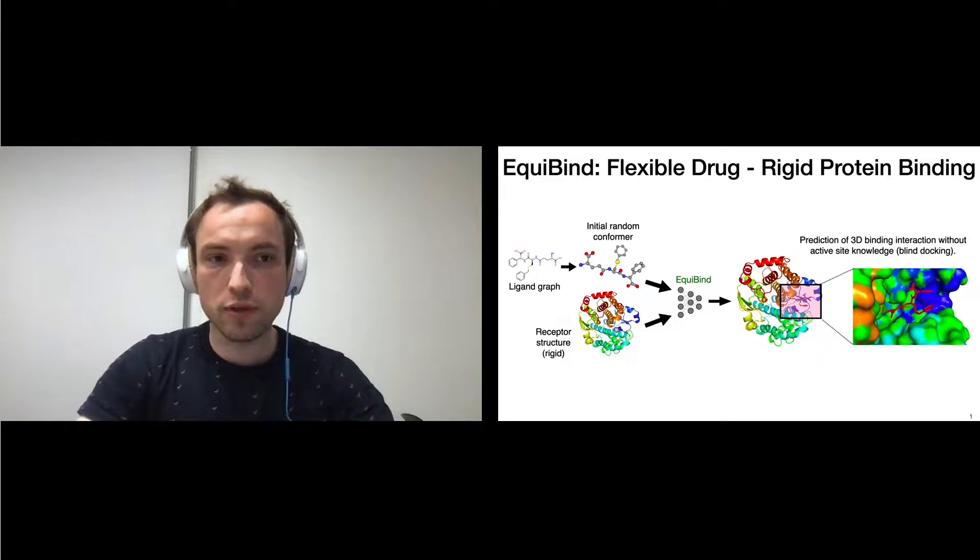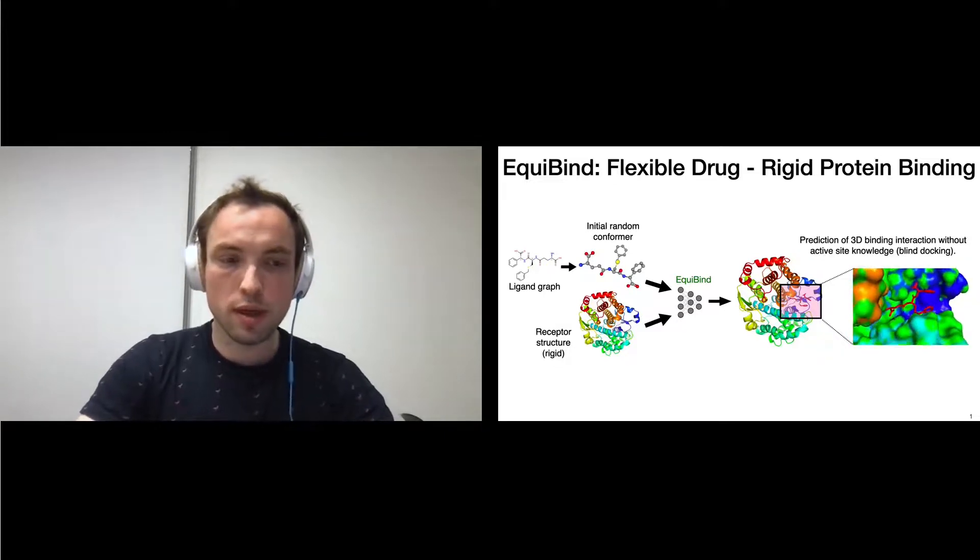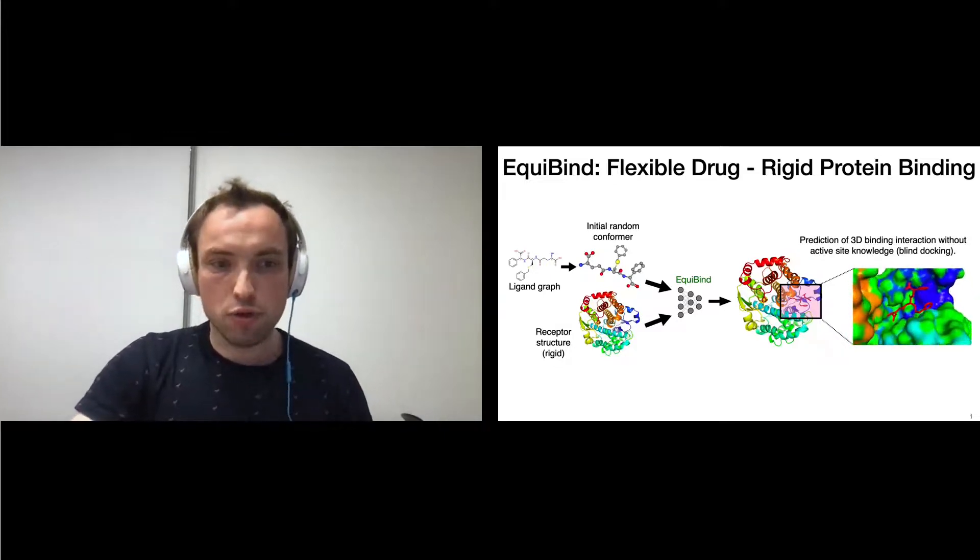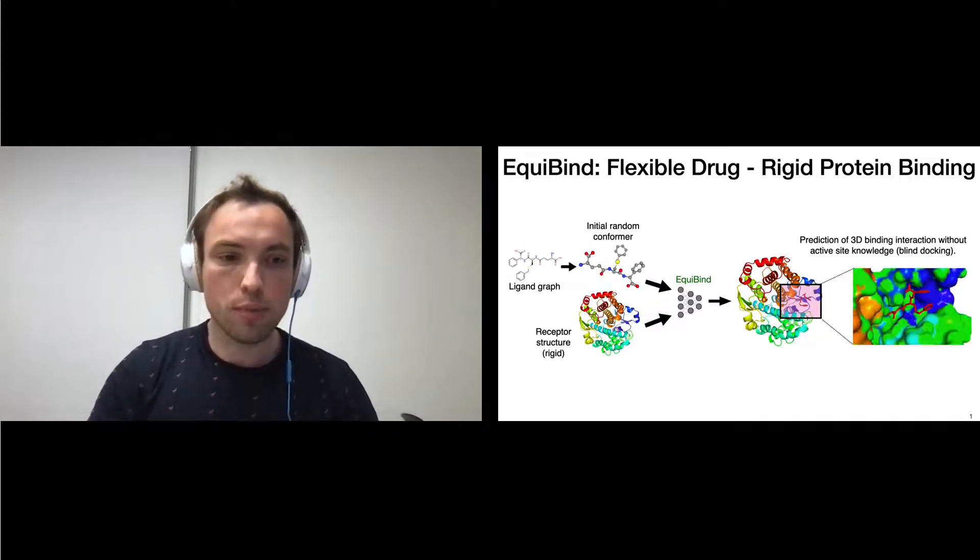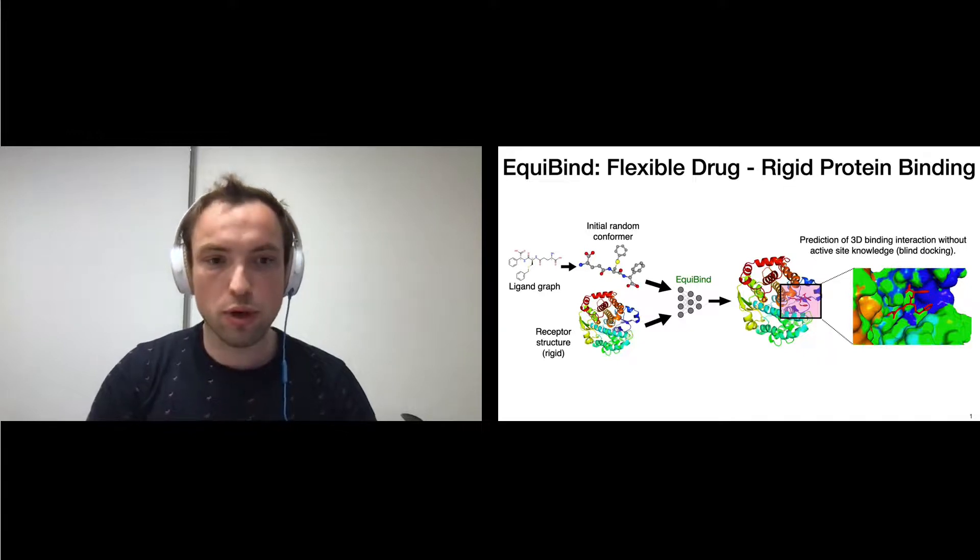Hi, I'm Octavian, and let's dive into the details of our EquiBind model. We take as input a ligand graph, which we convert to an initial random arctic conformer, and also a protein structure, which is going to remain rigid.